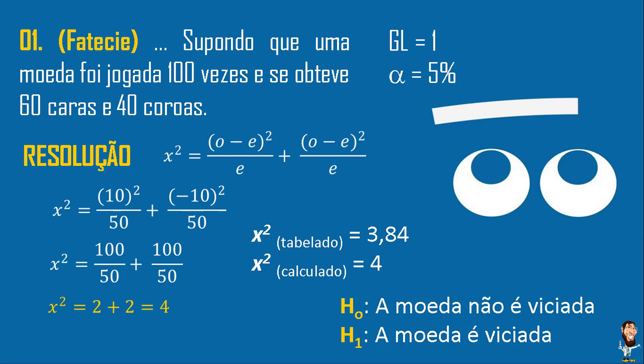O Q² tabelado, naquela tabela, dá o valor de 3,4 para um alfa de 5%, e o Q² que nós calculamos é igual a 4. Valores calculados abaixo do valor da tabela: não rejeito H0. Valores acima do valor da tabela: rejeito H0. Nesse caso, como o valor foi superior ao limite de 3,4, eu considero a moeda viciada — nego a hipótese H0.